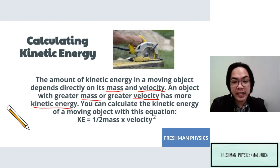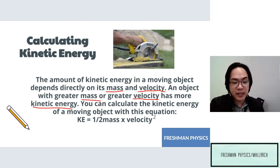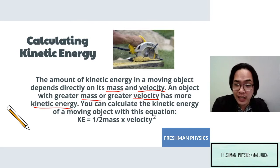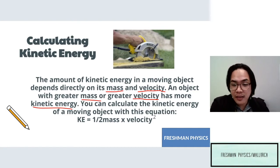Kinetic energy is directly proportional to mass, and it is also directly proportional to velocity. So the higher the kinetic energy, the higher its velocity will be.